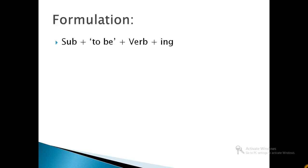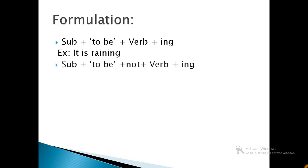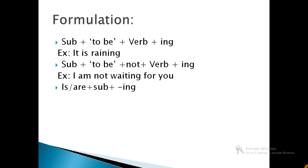The formulation of present continuous tense is as follows. For positive statements, we use subject plus to be plus verb plus ing. For negative statements, we use subject plus to be plus not plus verb plus ing. For example, I am not waiting for you. For questioning, we use is or are plus subject plus verb plus ing.